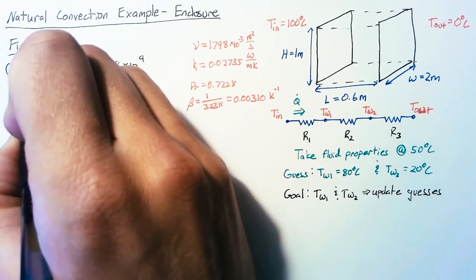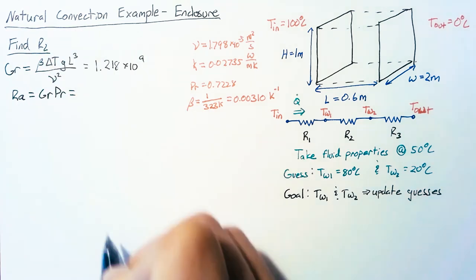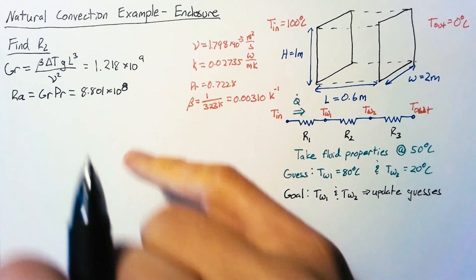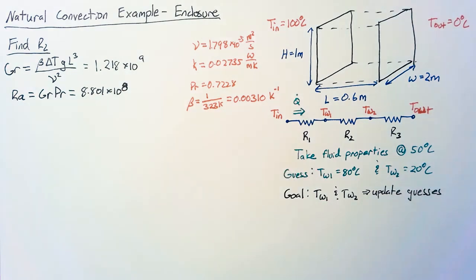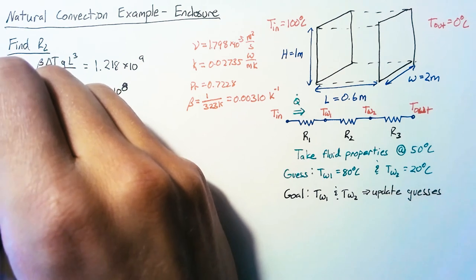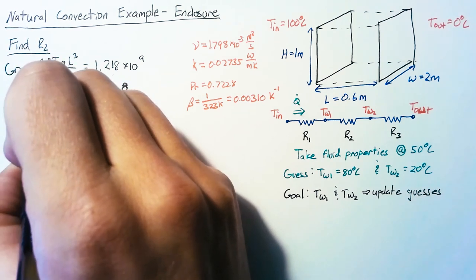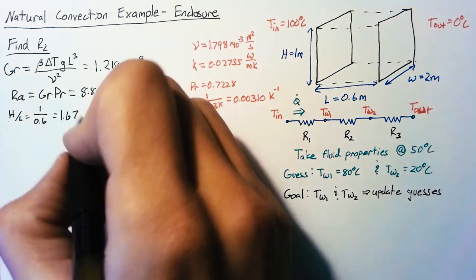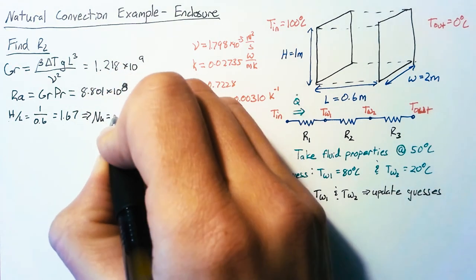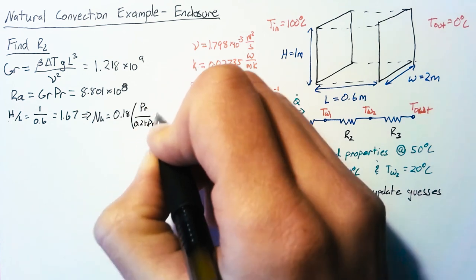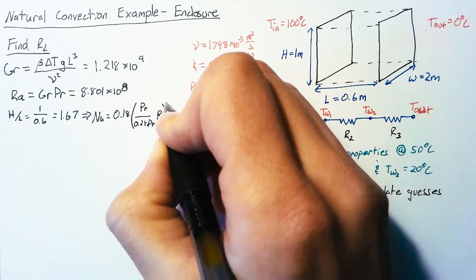Next we go ahead and calculate our Rayleigh number which is just Grashof times Prandtl and that gives us 8.801 times 10 to the eighth. Now we have multiple equations that we need to look through. Instead of only looking at the Rayleigh number to determine the equation we need, we also need to look at the ratio of H over L. So for this problem H over L is just 1 over 0.6 or 1.67. So that's between 1 and 2 and so our Nusselt number for that value is going to be 0.18 times the Prandtl number over 0.2 plus the Prandtl number multiplied by the Rayleigh number, the entire quantity to 0.29.